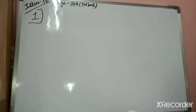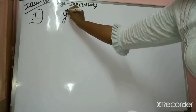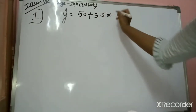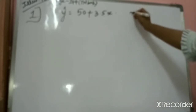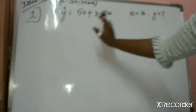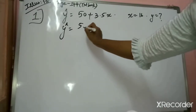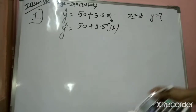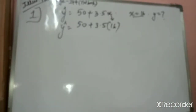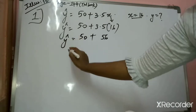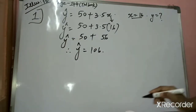For the first question, Y cap is given as 50 plus 3.5X. We need to find the error in estimating Y for X equals 16. So putting X=16: Y cap equals 50 plus 3.5 multiplied by 16. Take out your calculator — 3.5 multiplied by 16 is 56. So 50 plus 56 gives Y cap equals 106.